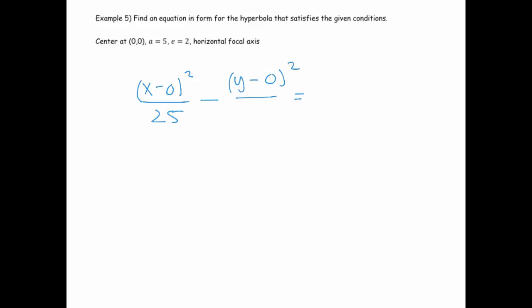So what's left to find is really just that b. So how do we find the b? Well, we're going to use that eccentricity info. So if the eccentricity is 2, and we know the eccentricity is c over a, well, then I know that it's c over 5. So that means that 2 equals c over 5, which means that 10 is equal to c.